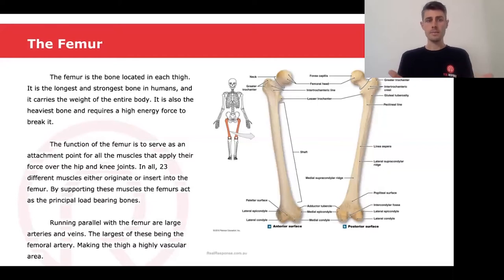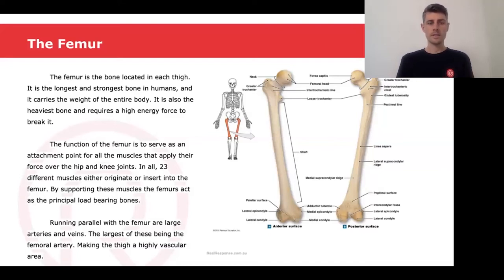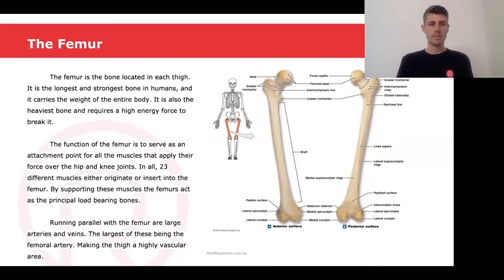If we look at the anatomy of the femur now, the bone is located in each thigh of the body. It's the longest and strongest bone in humans and it carries the entire weight of the body. It's also the heaviest bone and requires a high energy of force to break it. The function of the femur is to serve as an attachment point for all the muscles that apply their force over the hip and knee joints.